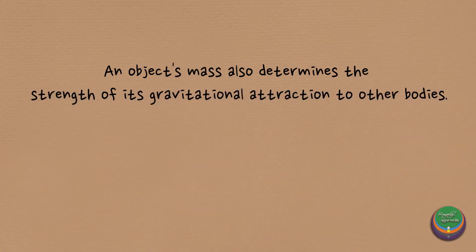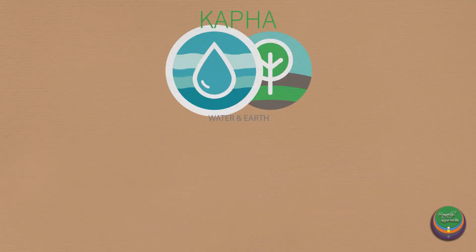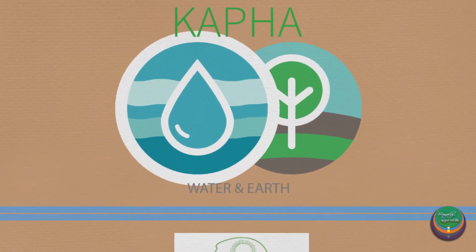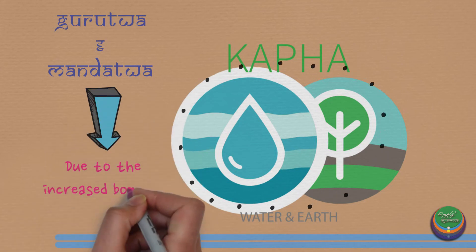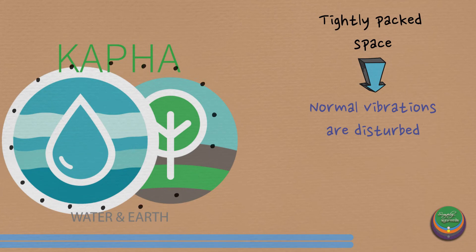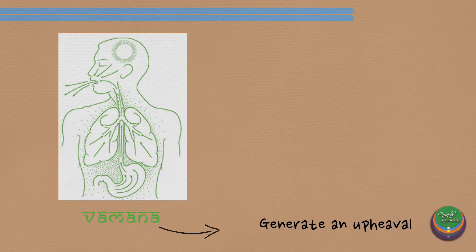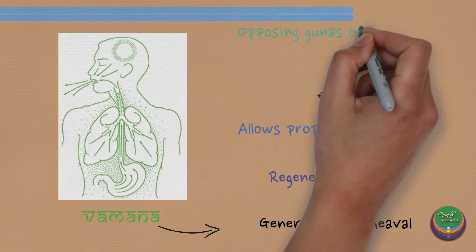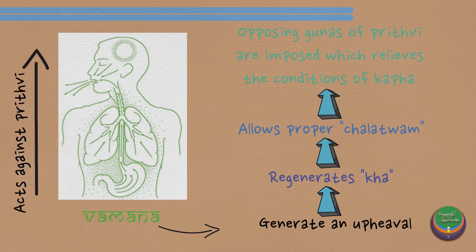We can understand how bonds create mass from our previous explanations. From the view of Chikitsa, most Kafaja conditions are best treated with Vamana. Kapha Dosha is Prithvi Pradhana, and the Gurutva and Mandatva caused by Kapha can be understood as due to increased bonding and compactness. Due to the tightly packed space, normal vibrations are hampered and normal functions of the body are disturbed. What Vamana does is generate an upheaval which regenerates Kha or proper space and allows proper Chalattvam to resume. The Urdhva Marga Dosha Nirharana of Vamana also acts against the Adhogami Guru Guna of Prithvi.